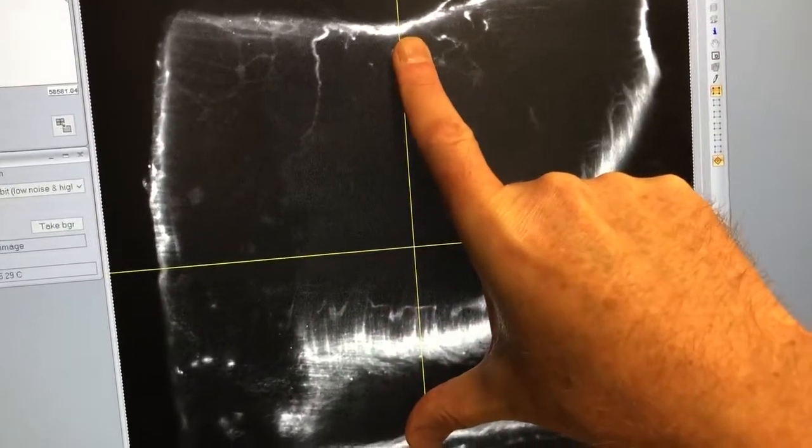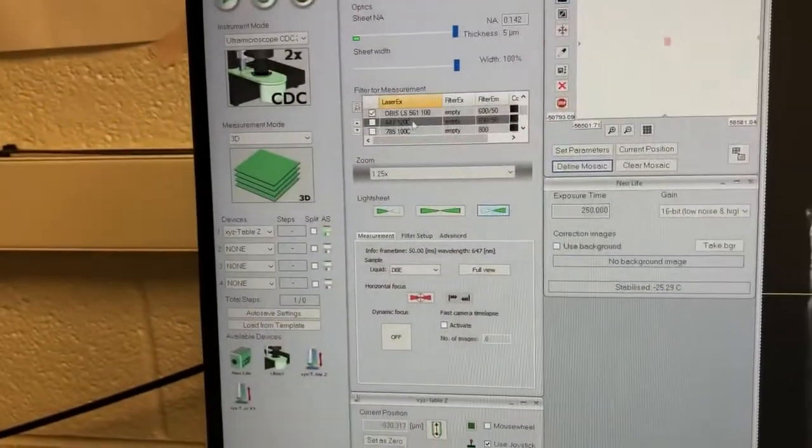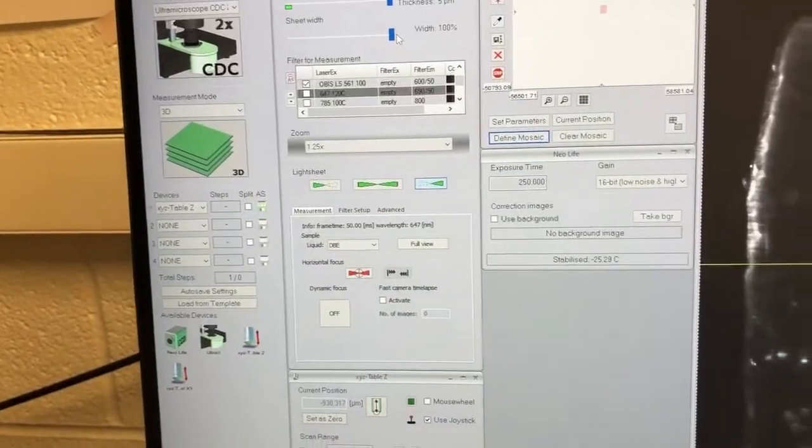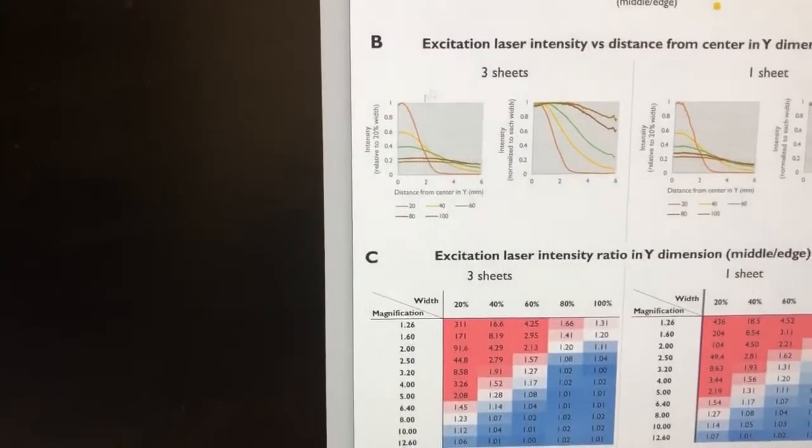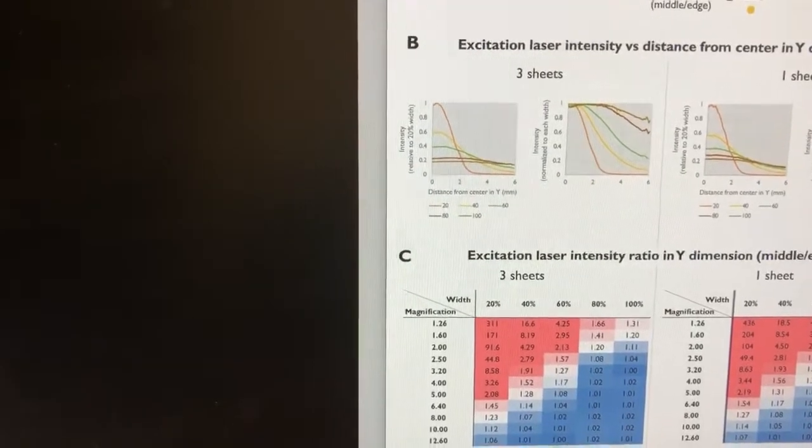Now if you extend the width, that flattens out. So that's shown here - for example, these are measurements of the intensity in the middle towards the side.